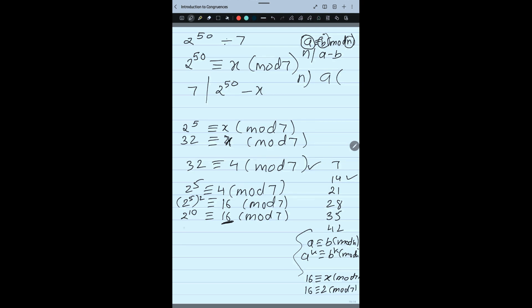Now I reached to 2 to the power 10, I should reach to 50. So how I can reach to 50? If I raise it to the power 5. So this will be 2 to the power 50 is equal to 2 to the power 5 mod 7. Both the sides I raise to the power 5.